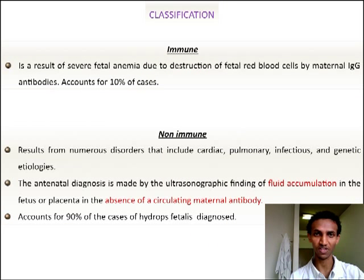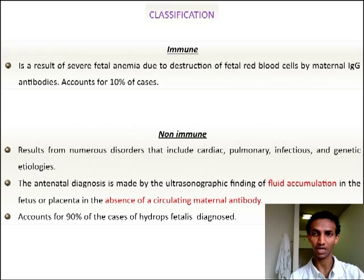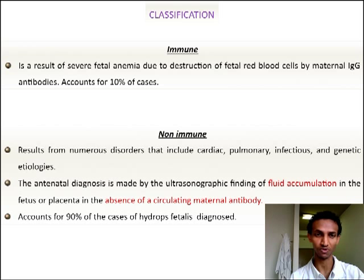Hydrops fetalis can be classified into two categories. The first is immune hydrops fetalis, which occurs when there is a presence of maternal IgG antibodies. This accounts for 10% of cases of hydrops fetalis.